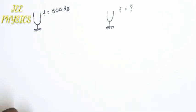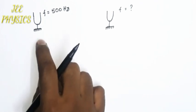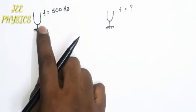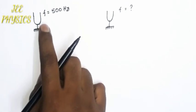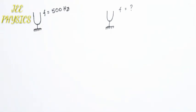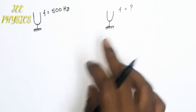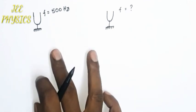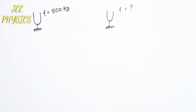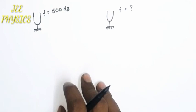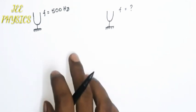In JEE Physics, JEE Main, Advanced, or NEET, the question may be asked in two ways. One way is waxing the known tuning fork and then vibrating them simultaneously and counting the number of beats per second. The other is waxing the unknown tuning fork and again vibrating them at the same time and finding the number of beats per second.